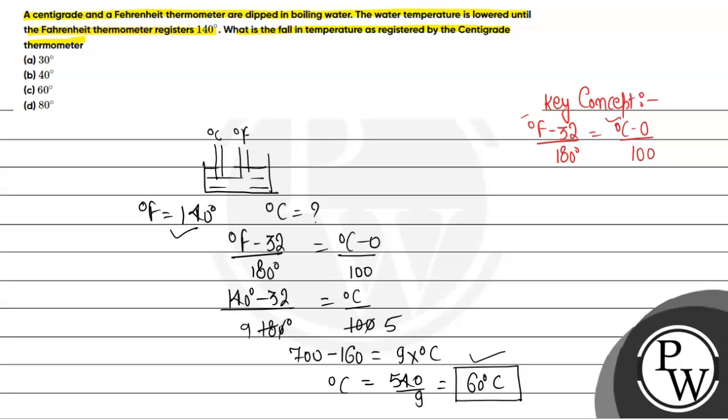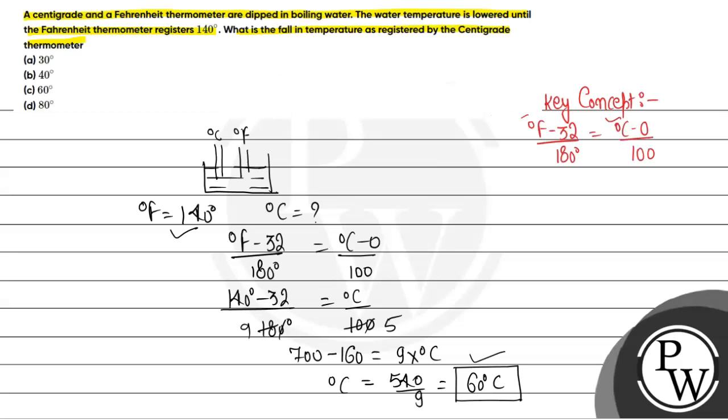But the question asks what is the fall in temperature as registered by the centigrade thermometer. So we can say fall in scaling in Celsius scale will be given as 100 minus 60 degree. The fall will be 40 degrees. From the given question we can say the fall in temperature as registered by the centigrade thermometer will be 40 degree Celsius.